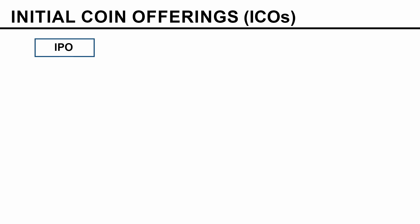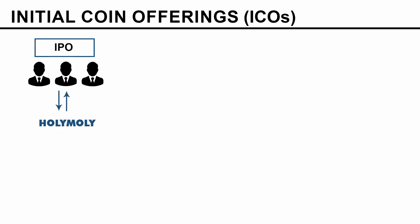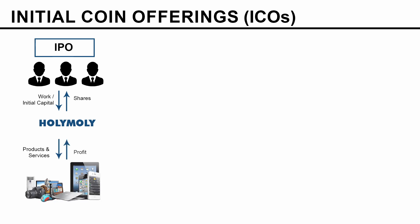So this is an IPO — let's see how it works. We have these people and they want to raise some money for their company, Holy Moly. First of all, they put in work, labor, and some initial capital into that company, and in return they get shares. Then they start producing products or providing services, and in return they get profit. That's how a company operates before it's publicly listed — as a private company.